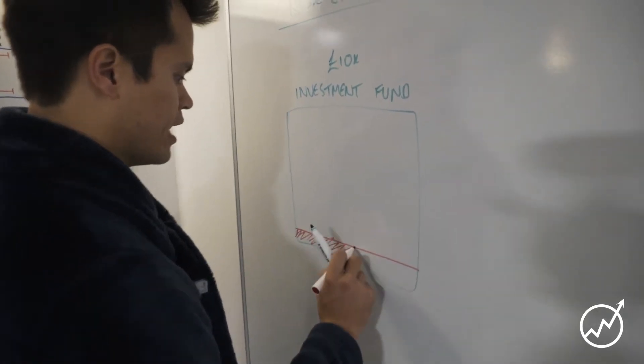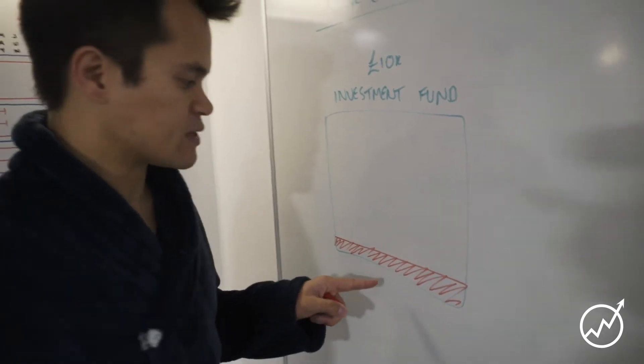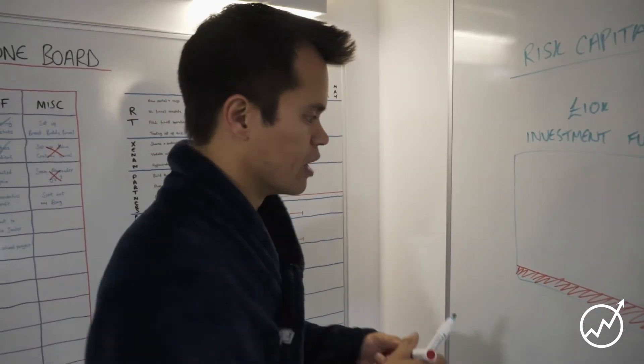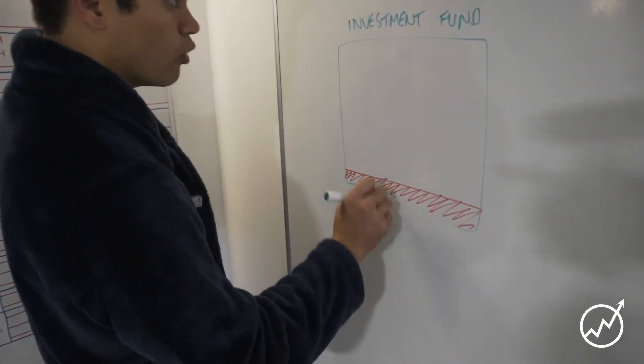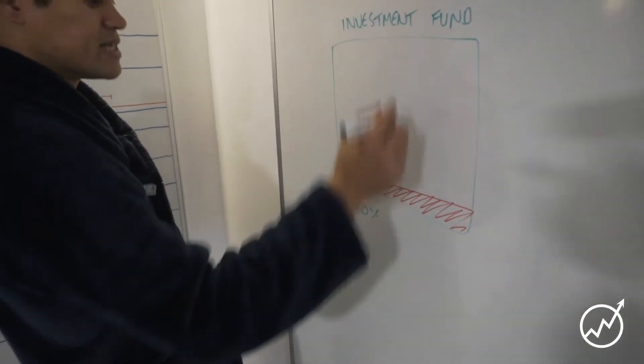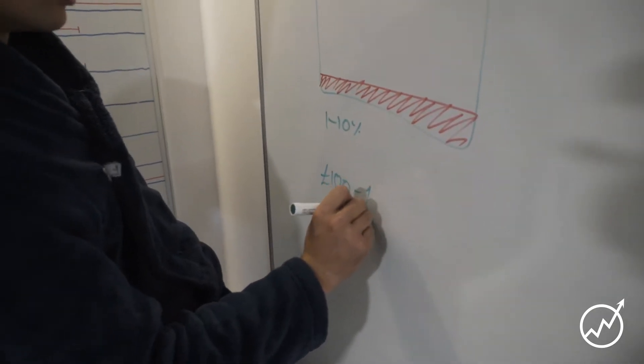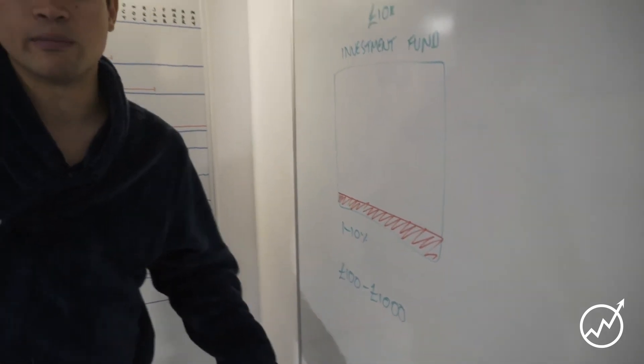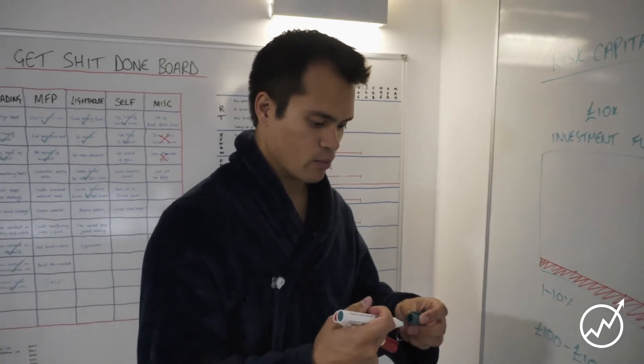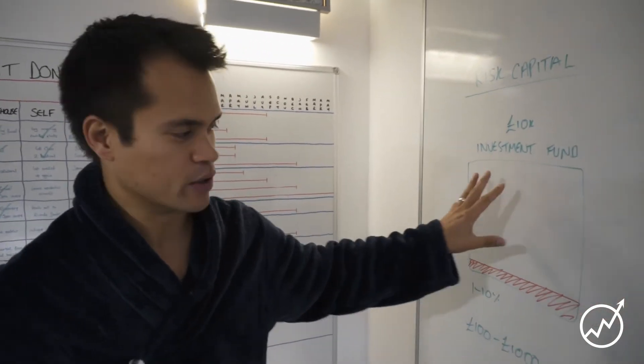This over here, this little red bit over here is your risk capital. That's for the higher yielding, higher risk type stuff. So that would be 1 to 10% of your investment fund. So if it was 10 grand, this would basically be anything from a hundred pounds to a thousand pounds. And that you can then put into cryptocurrencies or whatever harebrained scheme that you find on the internet. So that's risk capital. I think that's pretty straightforward.